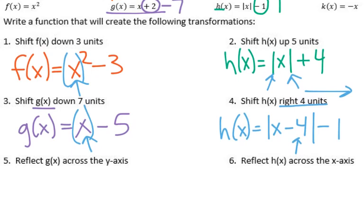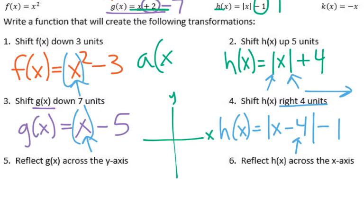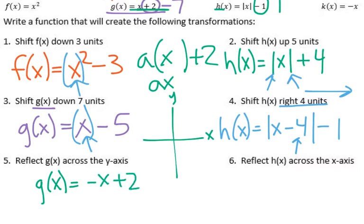Number five: reflect g of x across the y-axis. Remember, x is horizontal. To reflect across the y-axis, we need to put that negative on the inside of the parentheses. With this one, because there's no square or anything, it's kind of just going to be that negative across. So it would be g of x equals negative x plus two. With g of x being a linear equation, it looks basically like a line, so shifting it over the x or the y works similarly.